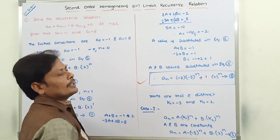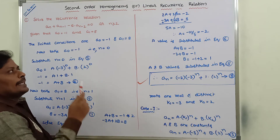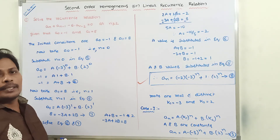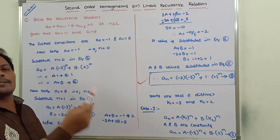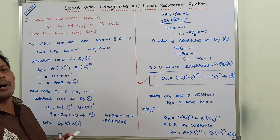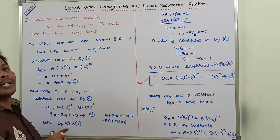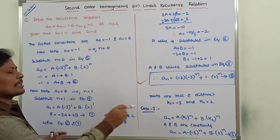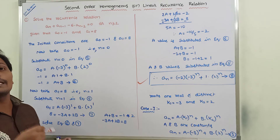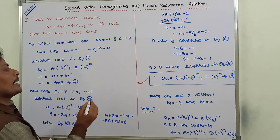This is the final solution of the second order linear recurrence relation. This problem belongs to Case 1 only. In the next videos, we will solve one problem on Case 2 and one example problem on Case 3, covering all three cases for second order linear homogeneous recurrence relations.